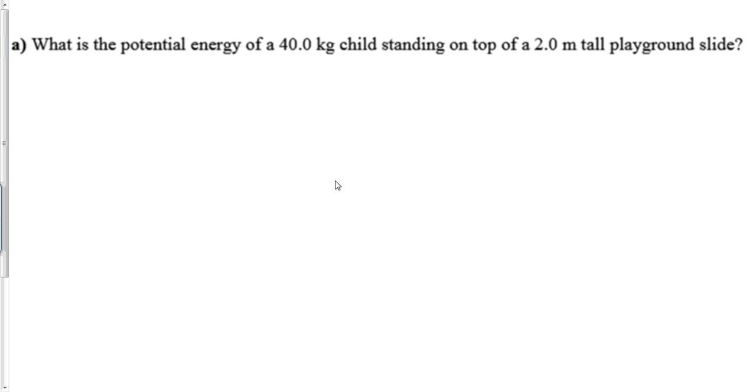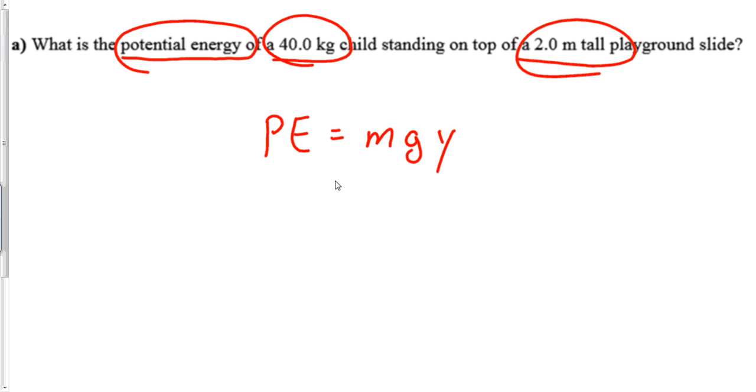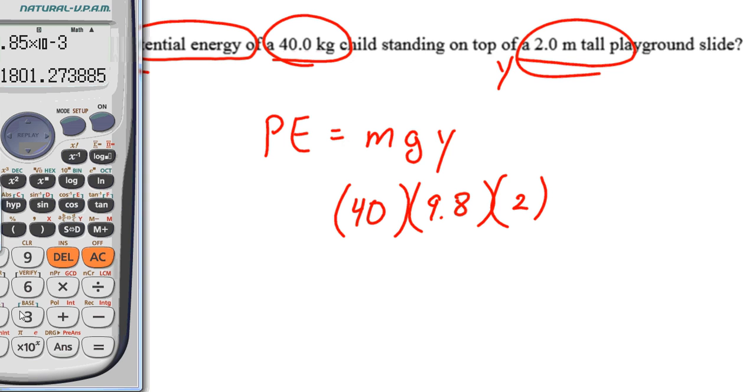Let's do the first problem. What is the potential energy? It didn't say what kind, but let's just read. In this case, you've got a mass, a child standing on top of a playground slide. That's easy. The equation for finding potential energy for an object up in the air is just mgy. So all we have to do is mass is 40 times g, which is 9.8, times the height, which is 2.